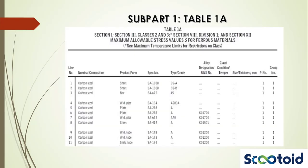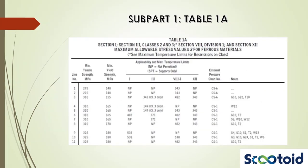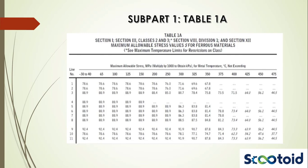Table 1a gives maximum allowable stresses for ferrous materials used in Section 1, Section 3 Classes 2 and 3, Section 8 Division 1, and Section 12. To order materials you should use their nominal compositions. For a given nominal composition, the table is arranged in increasing tensile strength. This is seen on the second page of the table where we find the minimum tensile strength, the minimum yield strength, and temperature limits of the material for different codes. We also see a reference to external pressure chart numbers and to notes. On pages 3 and 4 we find maximum allowable stresses at various temperatures as well as the time-dependent creep ranges, which are found in italics. The topic of creep is covered in the module on selection of materials.